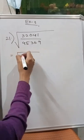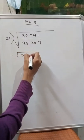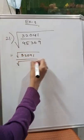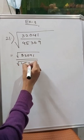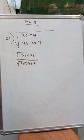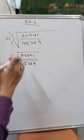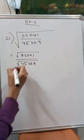We will simply take these numbers separately and find the square root of each. We can write this as: square root of 32041 over square root of 45369. Now we will find the square root of these two numbers separately. Let us first take 32041.